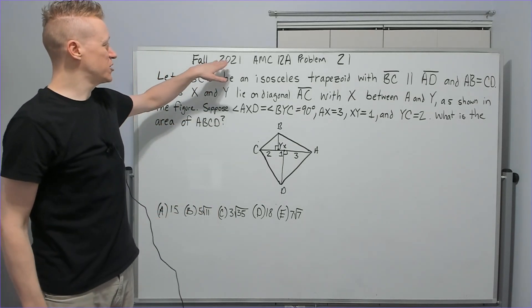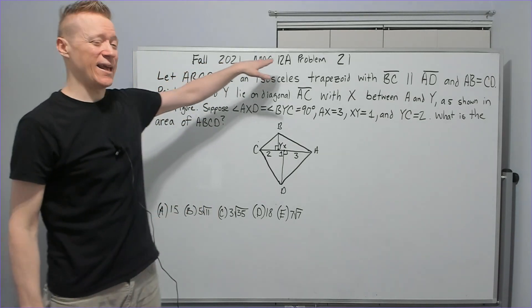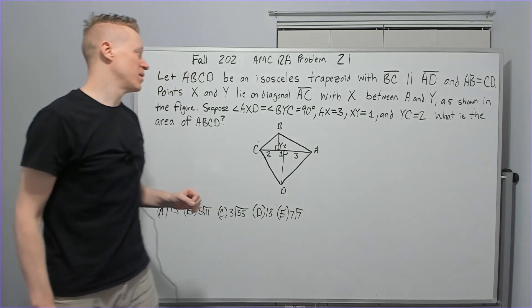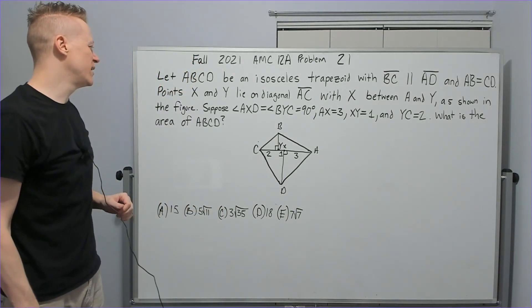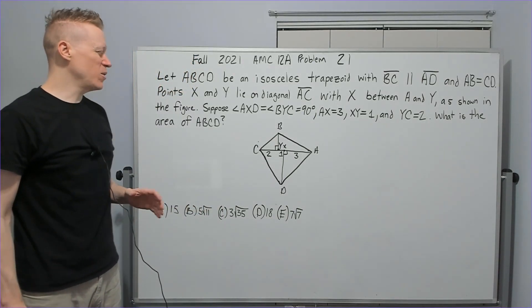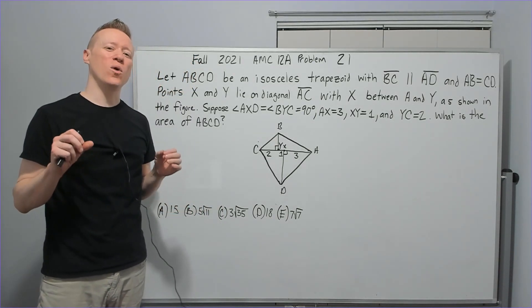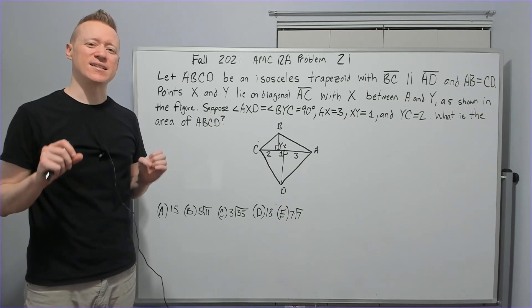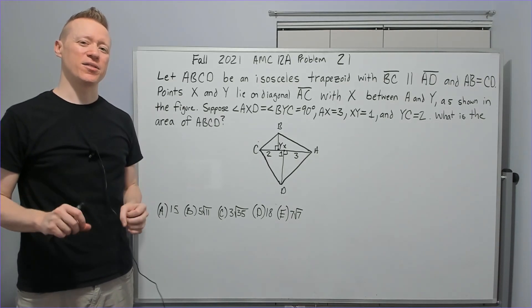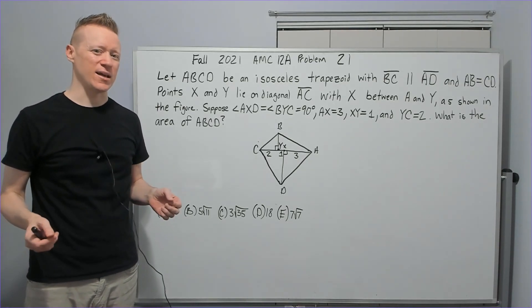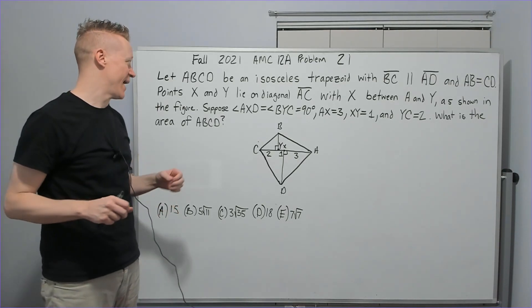Now we're going to do the Fall 2021 AMC 12A, Problem 21. We're going to think about what the test maker was thinking and why they did that, and we'll talk about that.